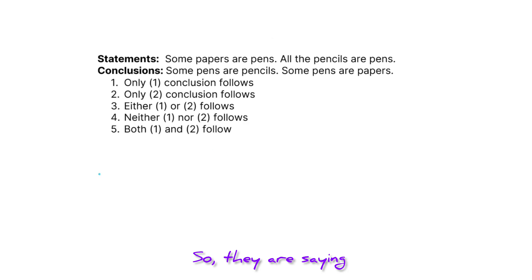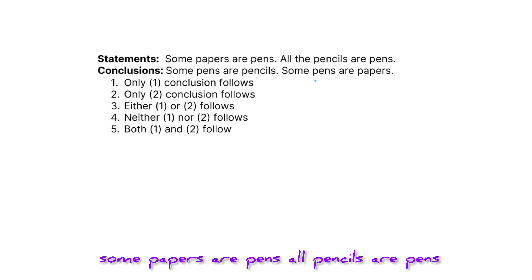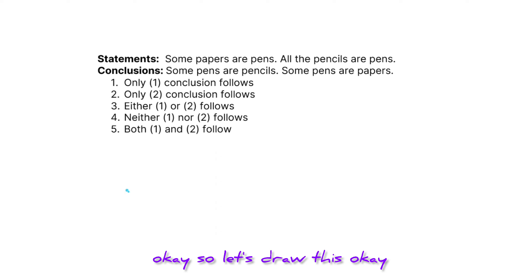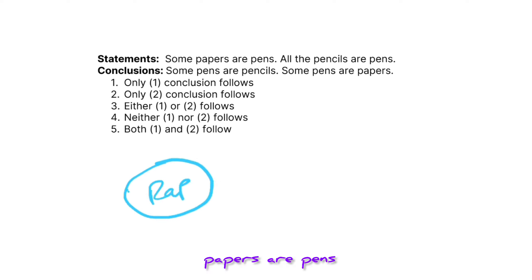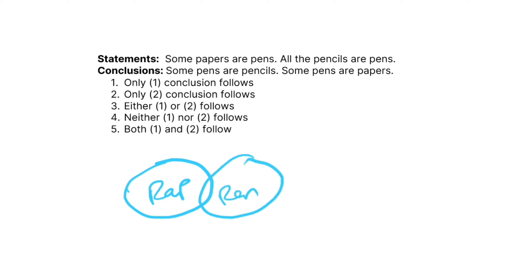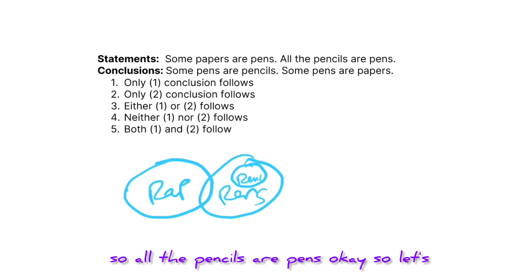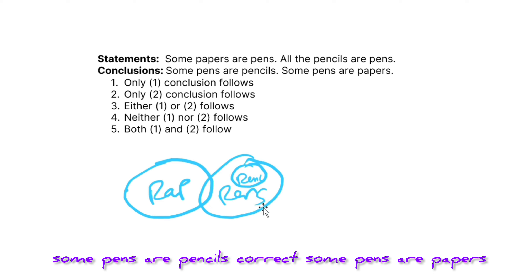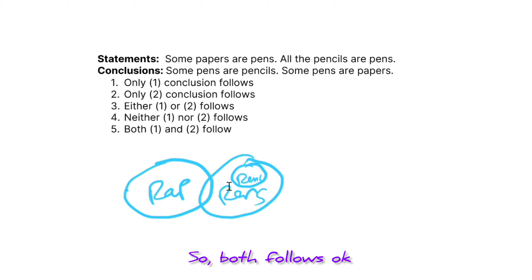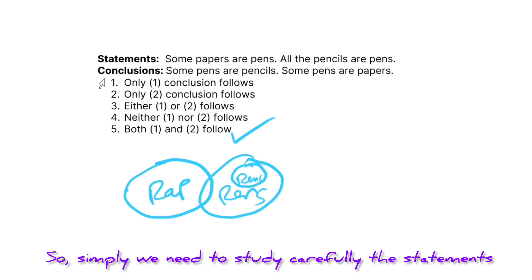Going to the next question: some papers are pens, and all pencils are pens. Let's draw this — some papers are pens, and all the pencils are pens. The conclusions: some pens are pencils — correct. Some pens are papers — correct. So both conclusions follow.